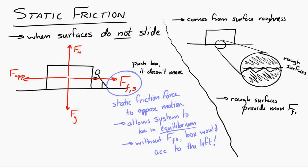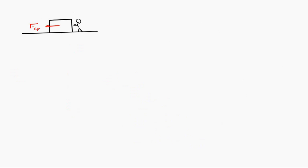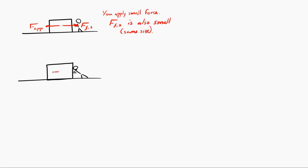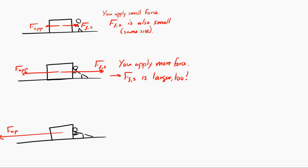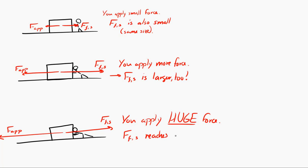Consider a thought experiment: push a box on the floor with a small force, and the static friction force is correspondingly small to keep it in equilibrium. Push harder, and the static friction force must be bigger to balance the applied force. But if you apply a huge force, at a certain point static friction can no longer provide enough force to keep the object in equilibrium — there is a limit.